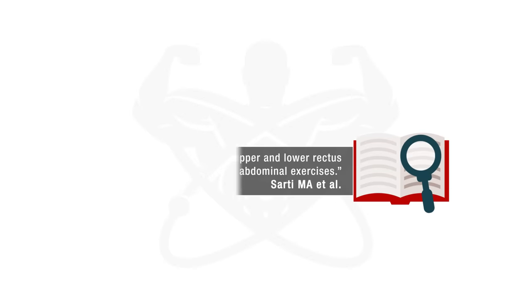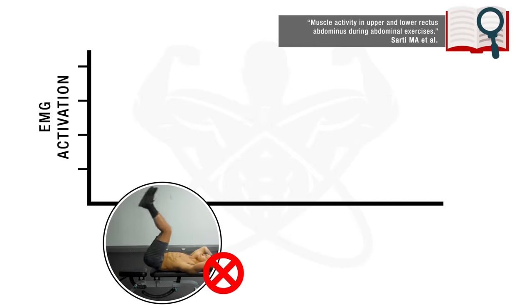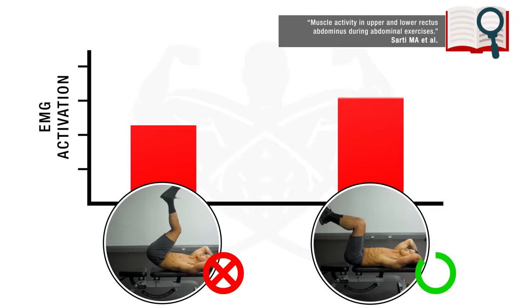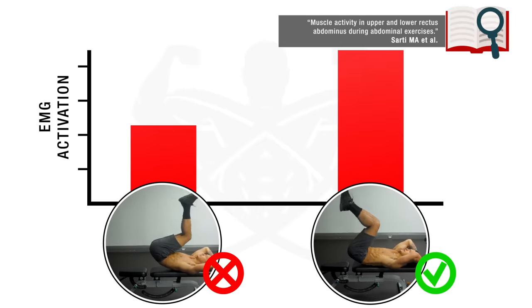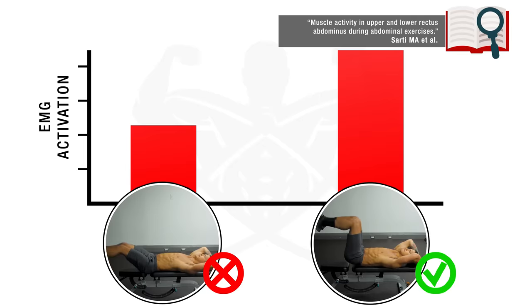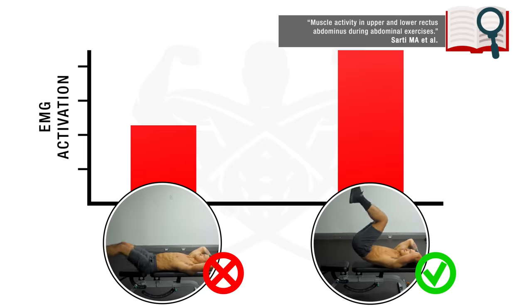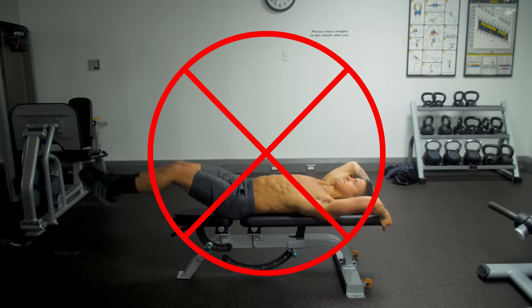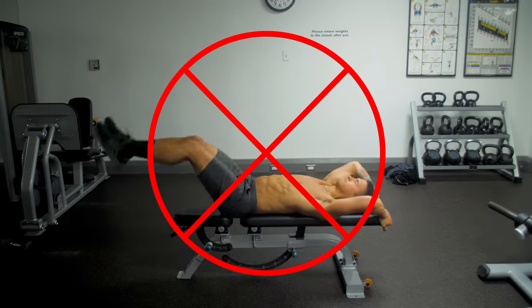This was actually proven in a study that looked at the reverse crunch. They found that subjects who performed the movement using that form were unable to effectively target the lower abs. Whereas subjects who performed the movement using correct form with something called a posterior pelvic tilt, which I'm about to show you, were now able to activate their lower abs to a significantly greater degree during the movement. Therefore, instead of performing it like this, here's what you want to do to maximize your lower abs activation.